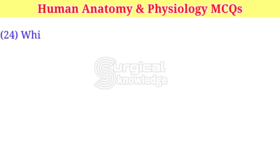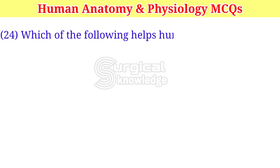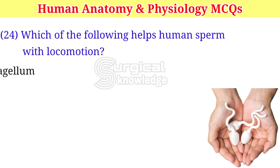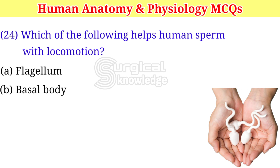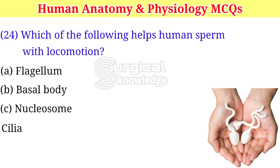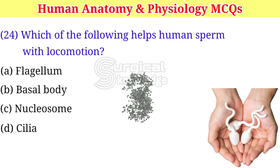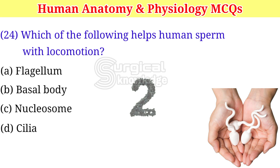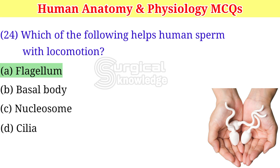Which of the following helps human sperm with locomotion? A. Flagellum. B. Basal body. C. Nucleosome. D. Cilia. Right answer is flagellum.